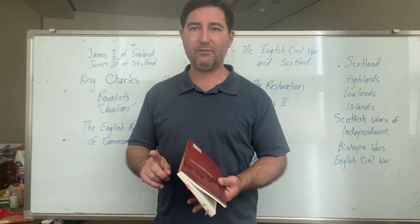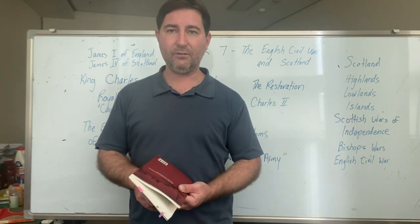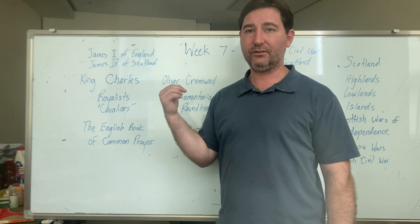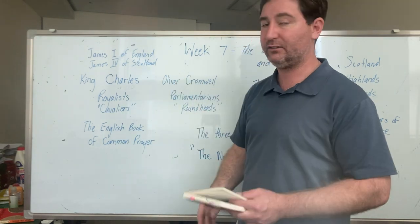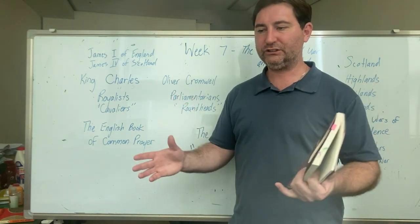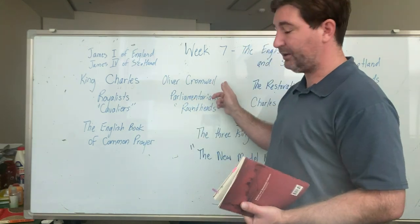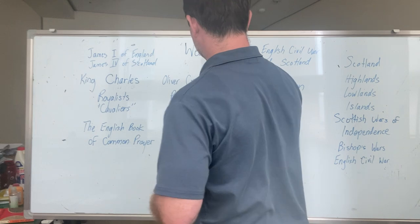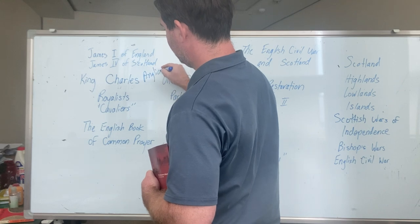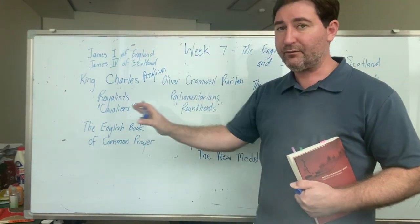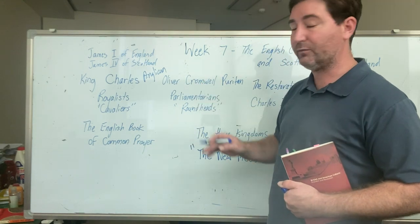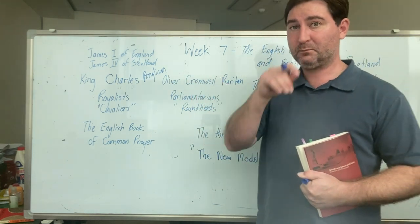Oliver Cromwell is the most significant figure on the Parliamentary side. He ends up being the person who pushes Parliament to execute the king. He was a Puritan. The people in control of the army and Parliament — especially Cromwell — were mostly Puritan. That's why it's sometimes called the Puritan Revolution. They fight for years; there are actually two parts to the Civil War. Parliament wins eventually because they outlast the king — he doesn't have enough people, money, or the right equipment.